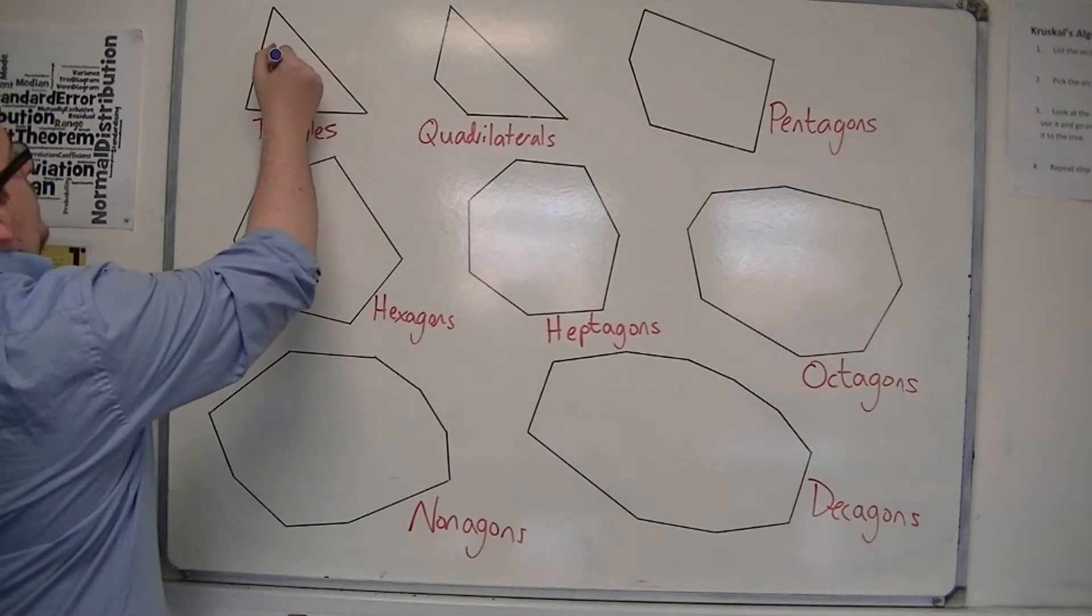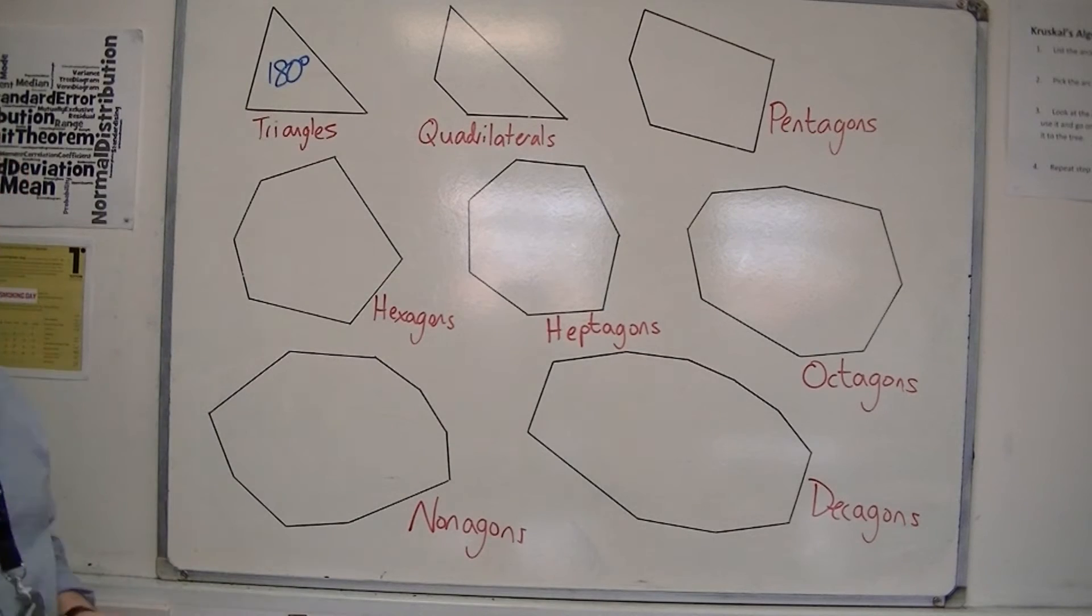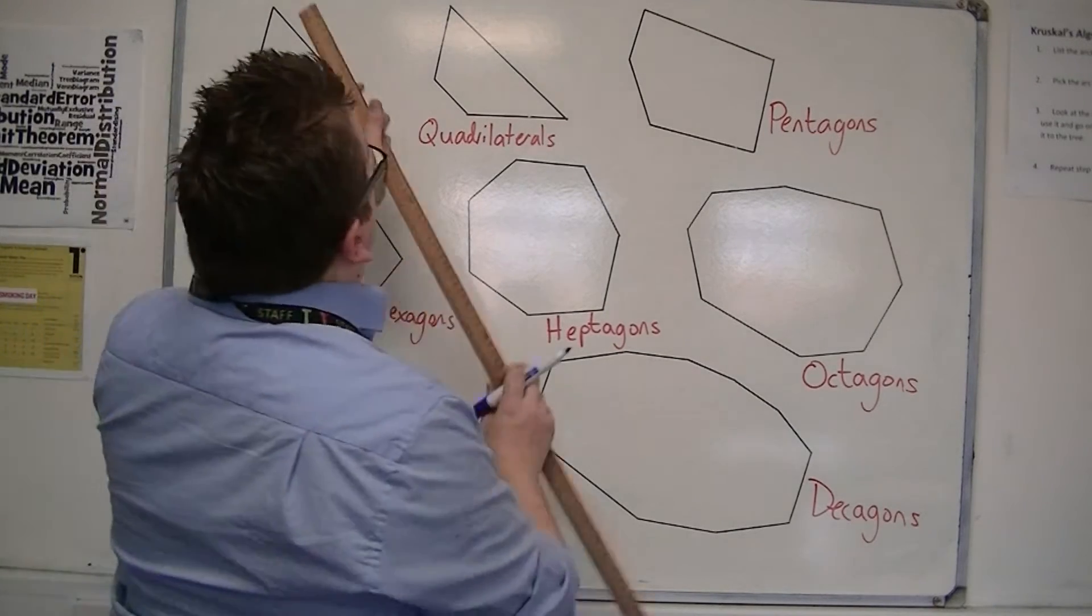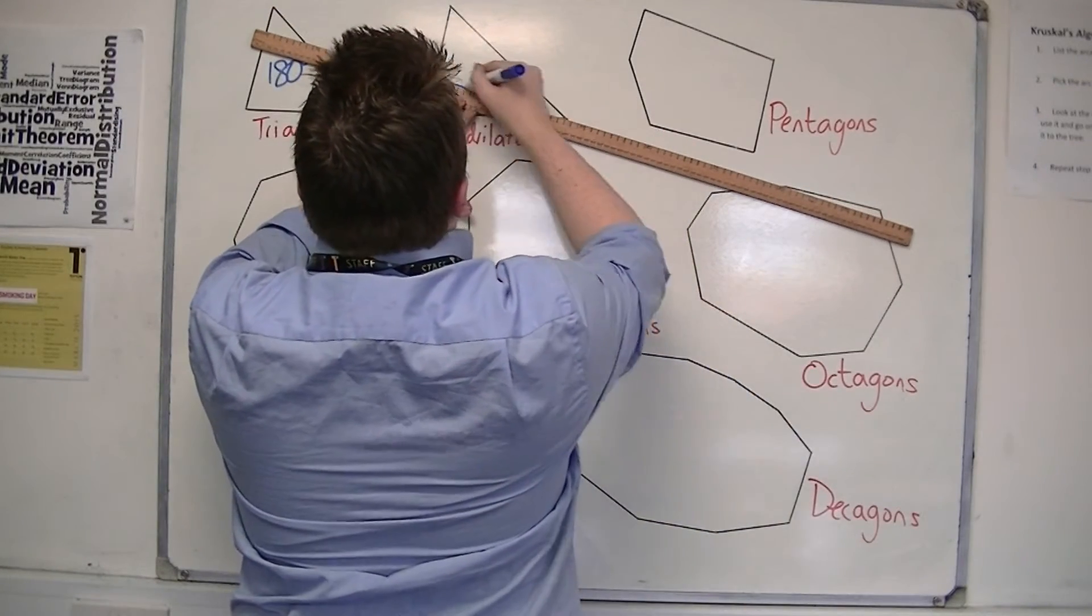So we know that the angles in a triangle add up to 180 degrees. For a quadrilateral, we know that they add up to 360 because you can divide the quadrilateral into two triangles.